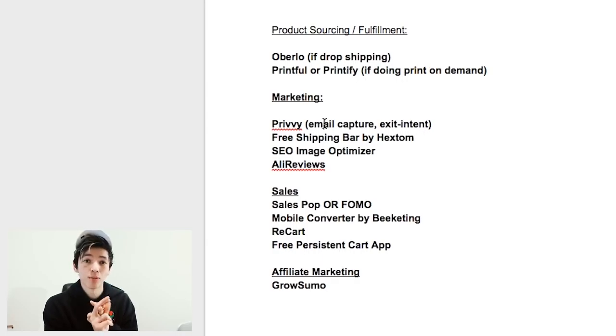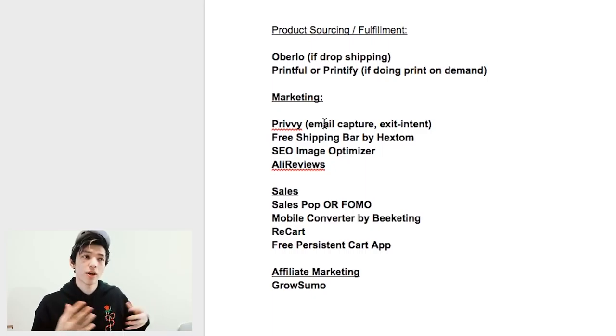That plays well with other apps like SalesPop or FOMO — those are two different ones you can use. It's a little pop-up on your store that says something like 'Johnny from Arkansas just bought this product' or 'Nathan from LA just bought this product 10 minutes ago.' It builds customer trust and shows there are other people active on the site. Some apps let you simulate sales if you don't have any yet, while others are more legitimate and show real-time orders.